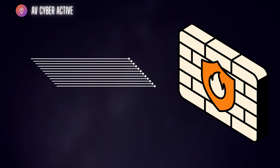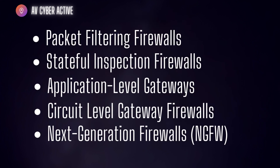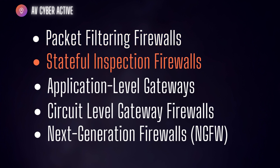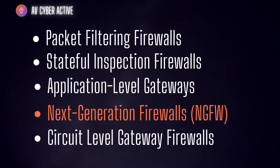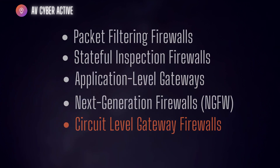Today we're going to get an overview of five different types of firewalls: packet filtering firewall, stateful inspection firewall, application gateway firewall, next-generation firewall, and circuit-level gateway firewalls.